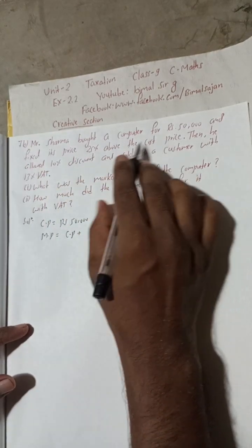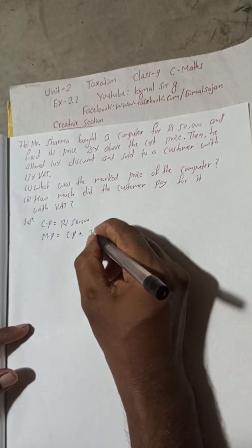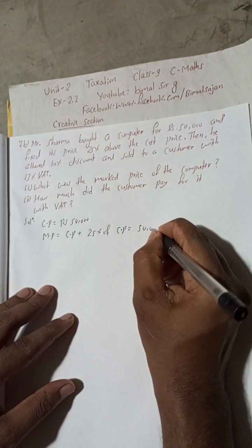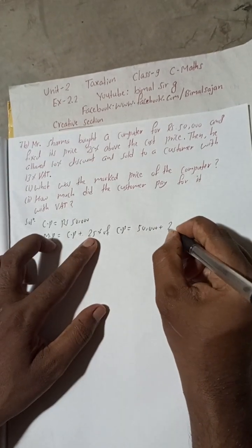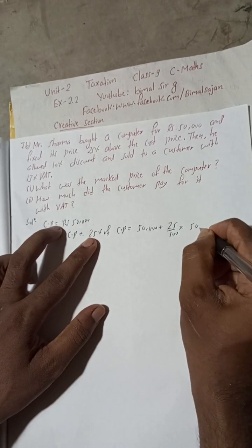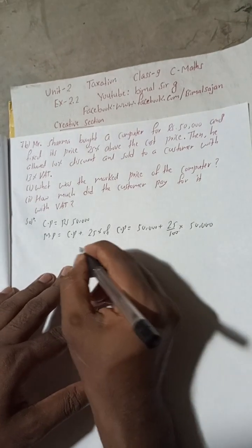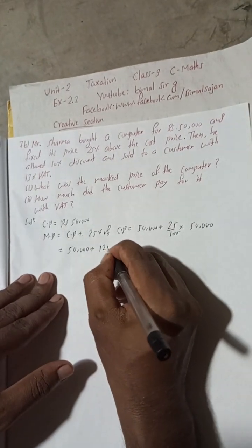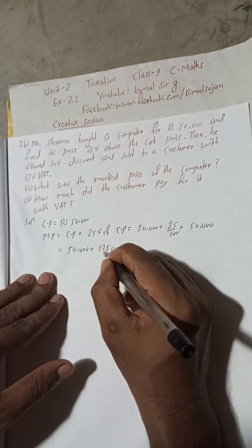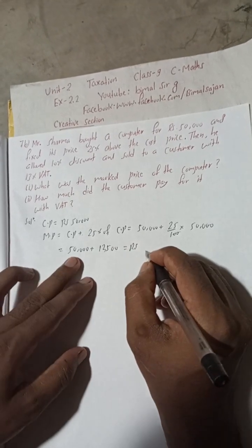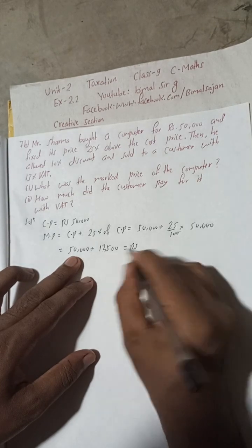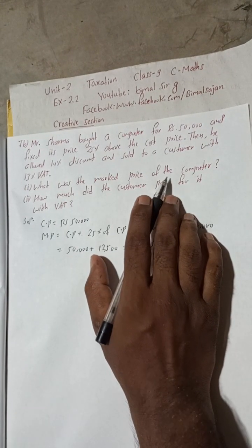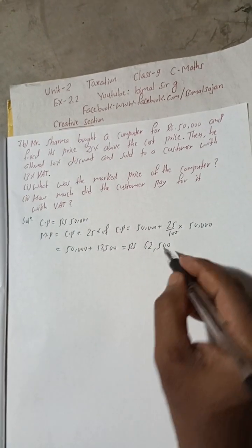Marked price equals CP plus 25 percent of CP. So this is 50,000 plus 25 divided by 100 into 50,000. Cancelling zeros: 50,000 plus 12,500. When you add this you get Rs. 62,500. So the marked price of the computer is Rs. 62,500. This is answer number one.